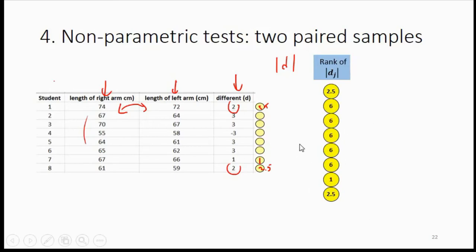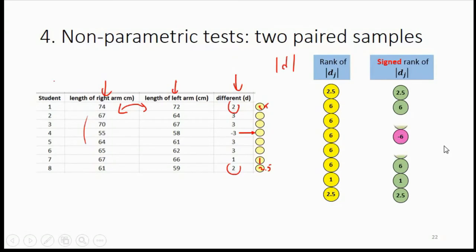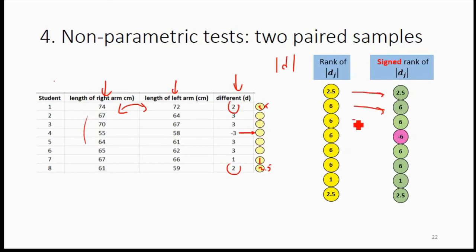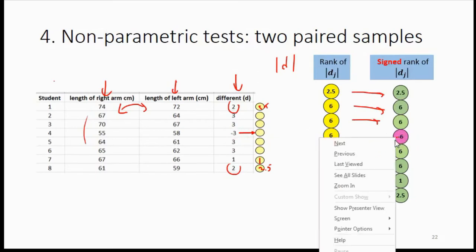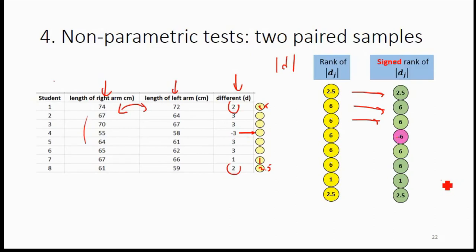The next thing you have to do is to sign the rank. For example, a rank of 6 needs a sign assigned to it. The positive differences remain as positive ranks, but where the difference is negative, you put a negative sign on that rank.